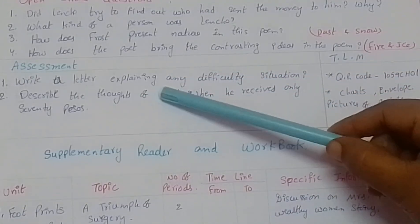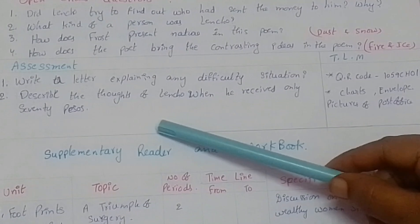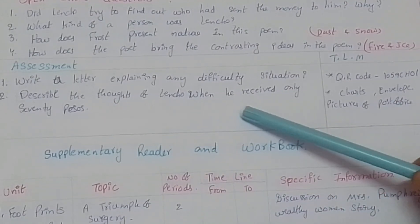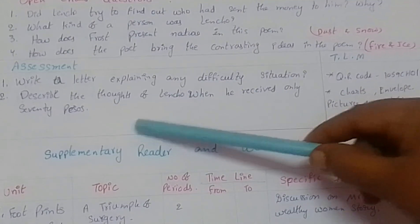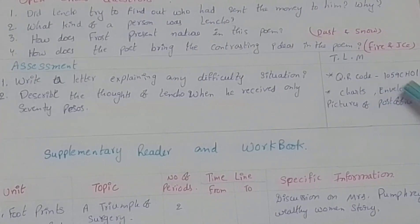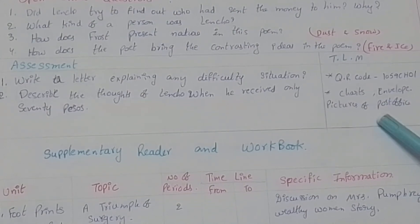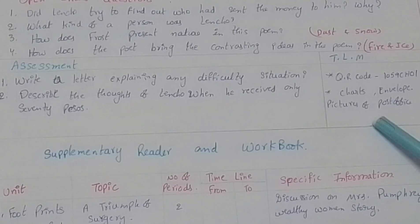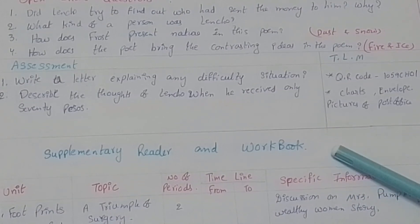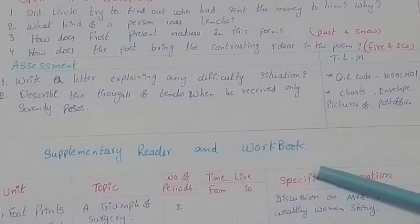Assessment: Write a letter explaining any difficult situation. Describe the thoughts of Lencho when he received only 70 pesos. We use the TLM like the QR codes of the textbook and supplementary readers, charts, envelope cover and pictures of a post office, and pictures of a corn farm, or we can display the corn directly.